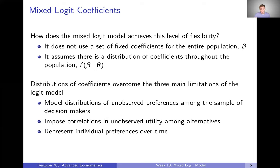We're going to model these distributions of coefficients, which essentially model distributions of unobserved preferences among the sample of decision makers. You can think about this as allowing the marginal utility, or whatever our structural parameters represent, to vary throughout the population for unobserved reasons. It's also going to impose additional correlations in unobserved utility among alternatives, allowing for more flexible substitution patterns than we even got from our generalized extreme value models. And it's also going to allow for representation of individual preferences over time, which, if those individual preferences are constant over time and baked into the model, will allow for better use with panel data.